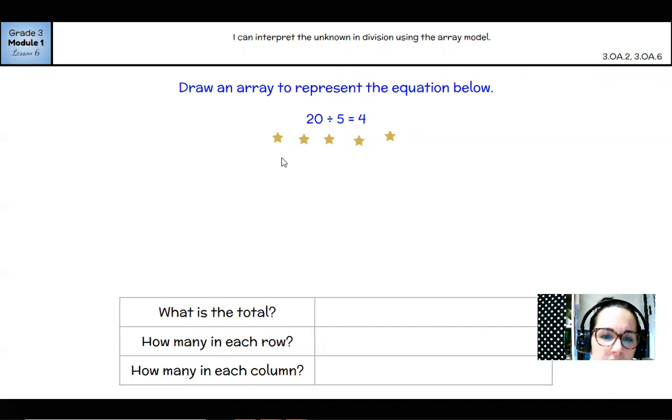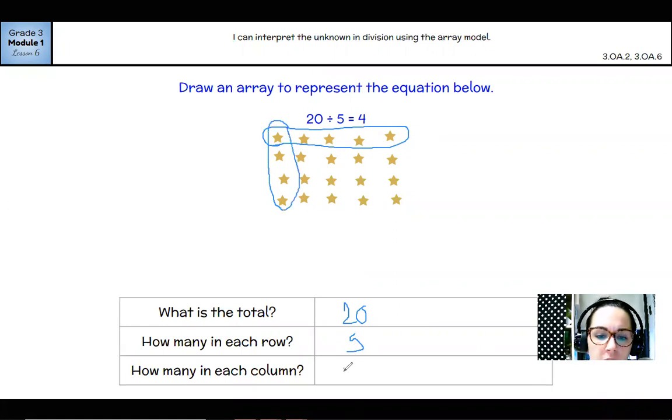So I've already got 5, 6, 7, 8, 9, 10, 11, 12, 13, 14, 15, 16, 17, 18, 19, 20. All right, so let's check this out. What is the total? My total is 20. How many are in each row? So remember that rows go side to side, so there are 5 in each row. And how many are in each column? Columns go up and down, so there are 4 in each column. So that's how they came up with that answer of 4. 20 divided by 5 equals 4.